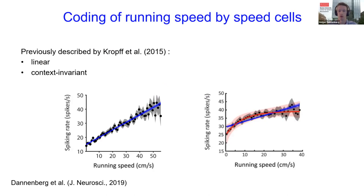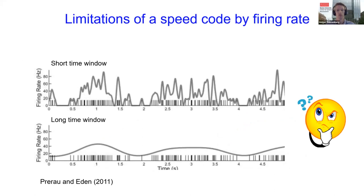Moreover, speed tuning curves do not allow conclusions about the time scale of firing rate modulation. A firing rate is not a physical property of the spike train but is derived by integrating spikes over time. This raises an important question: which time window should be used for the computation of a firing rate signal? With a short time window, the firing rate shows fast changes and appears very variable; with a longer time window, the result is slower changes — and importantly, the underlying spike train is exactly the same in both cases.